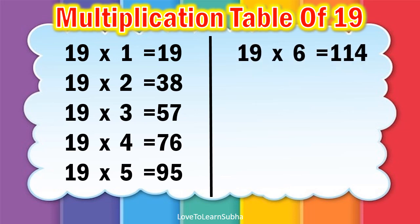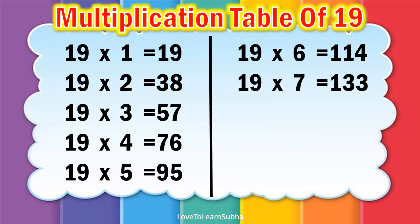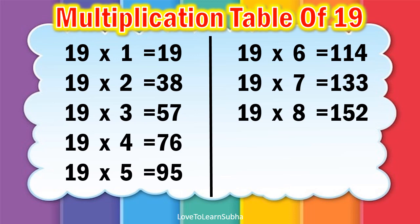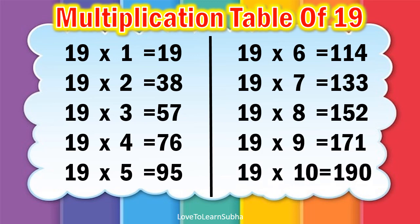Nineteen sixes are hundred and fourteen. Nineteen sevens are hundred and thirty-three. Nineteen eights are hundred and fifty-two. Nineteen nines are hundred and seventy-one. Nineteen tens are hundred and ninety.